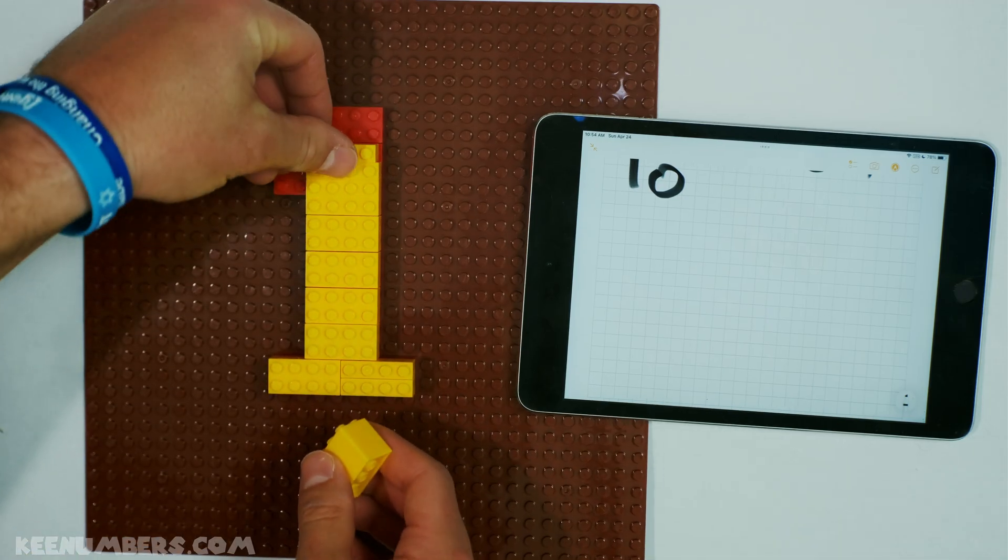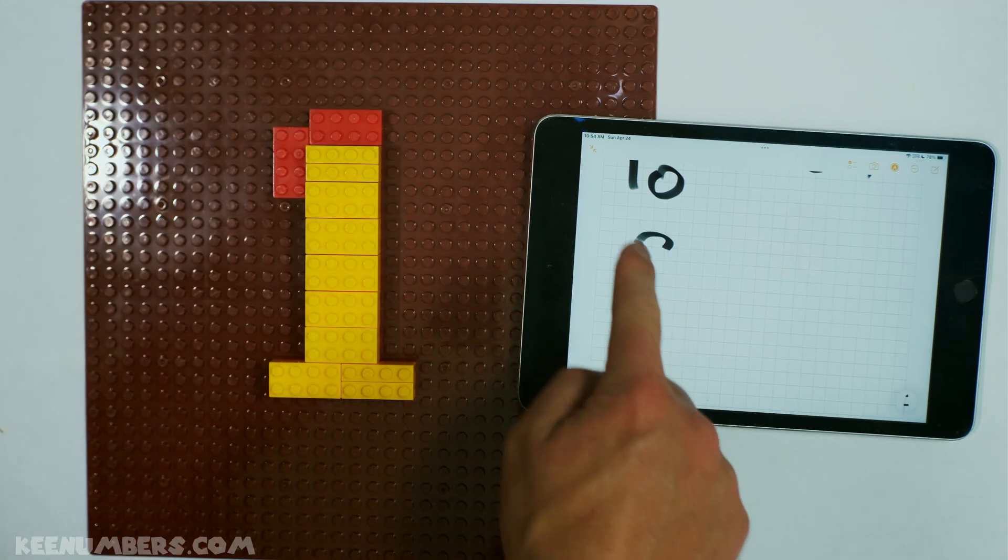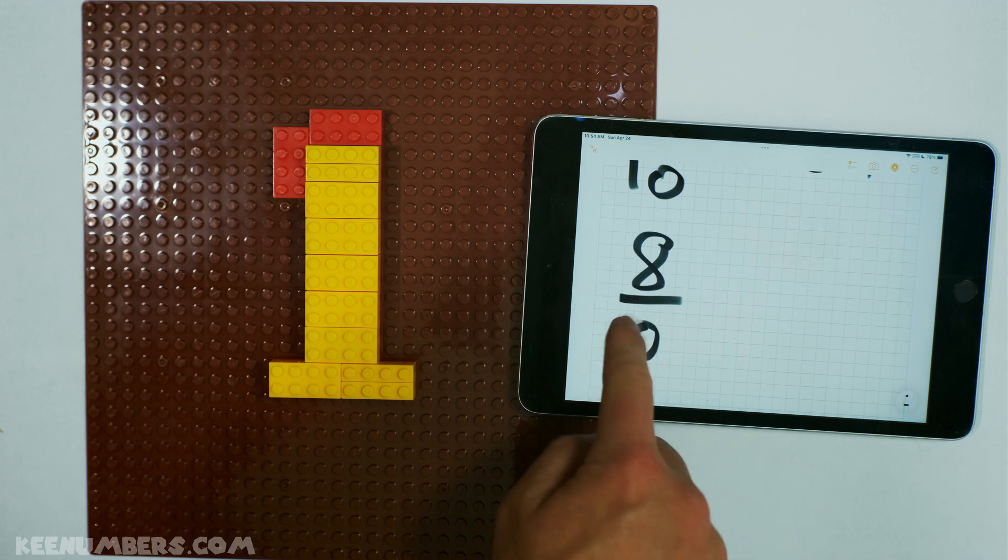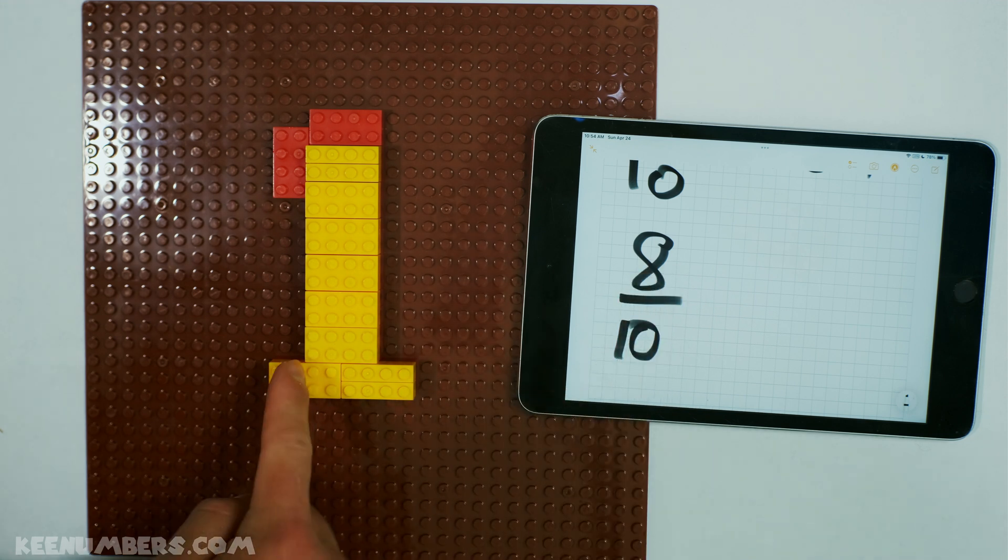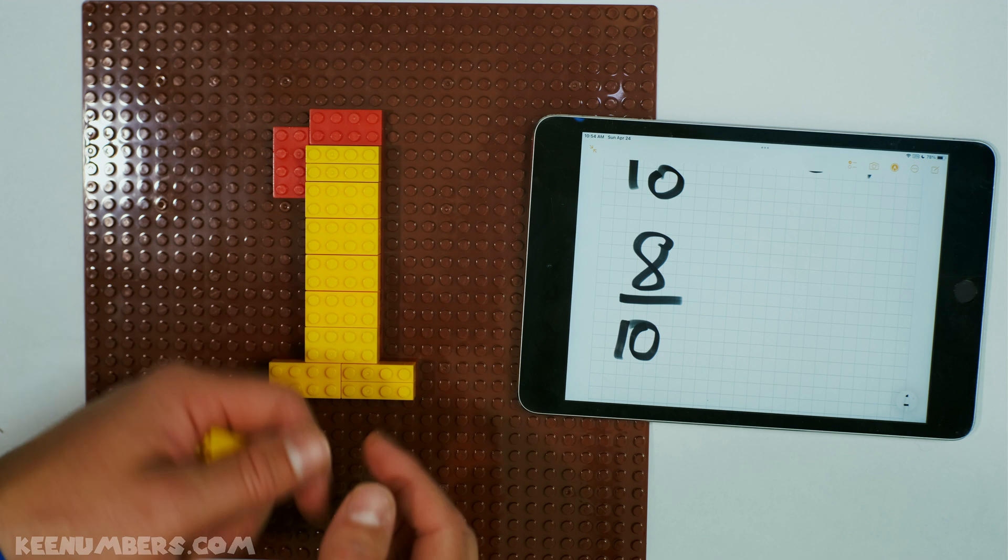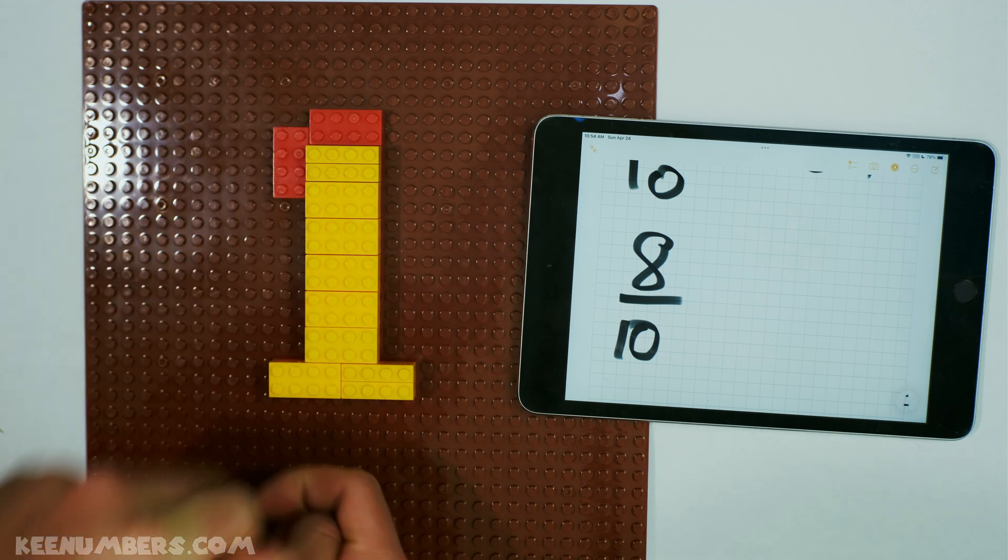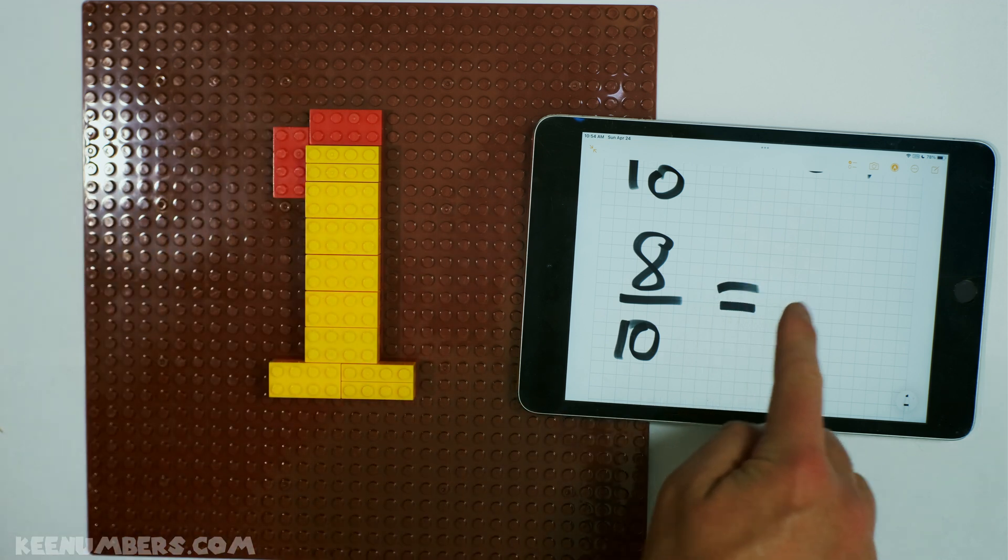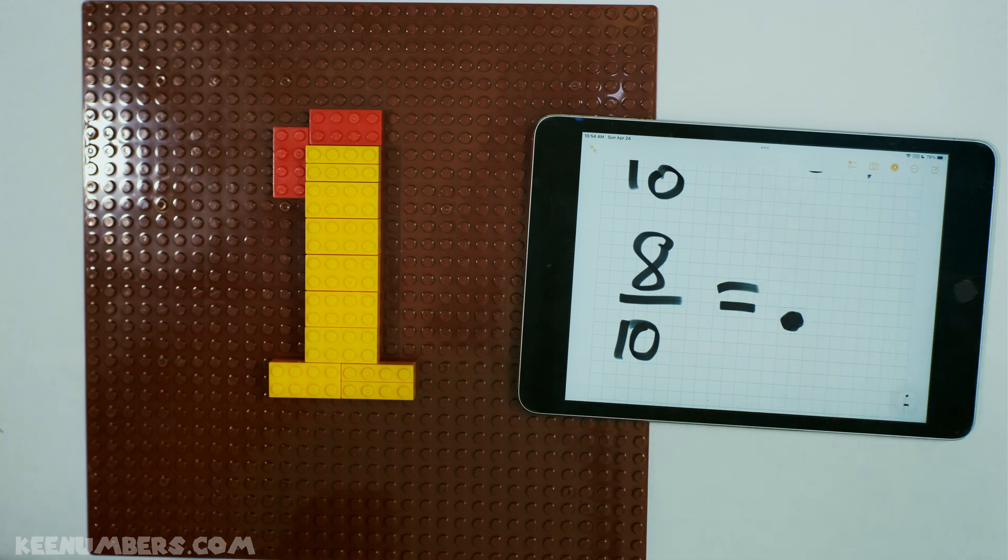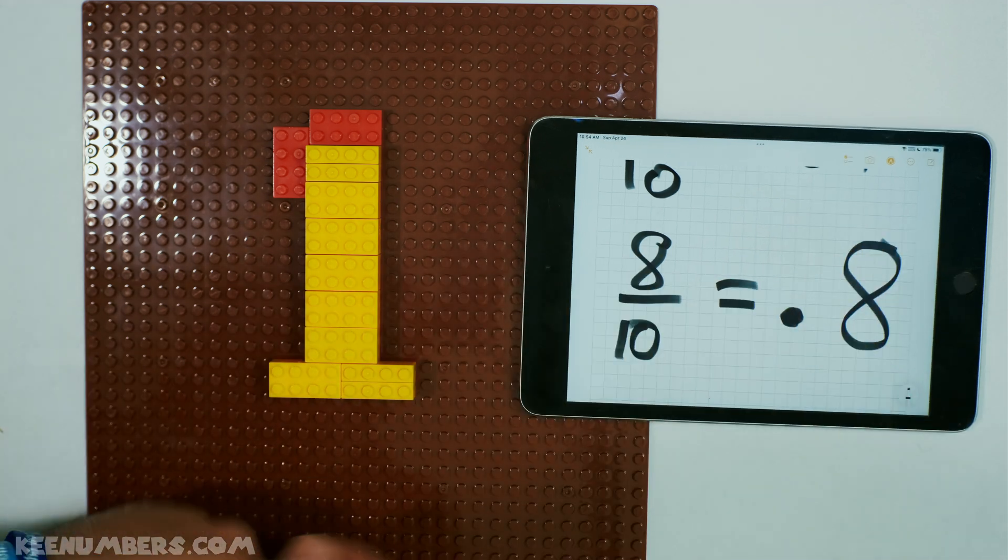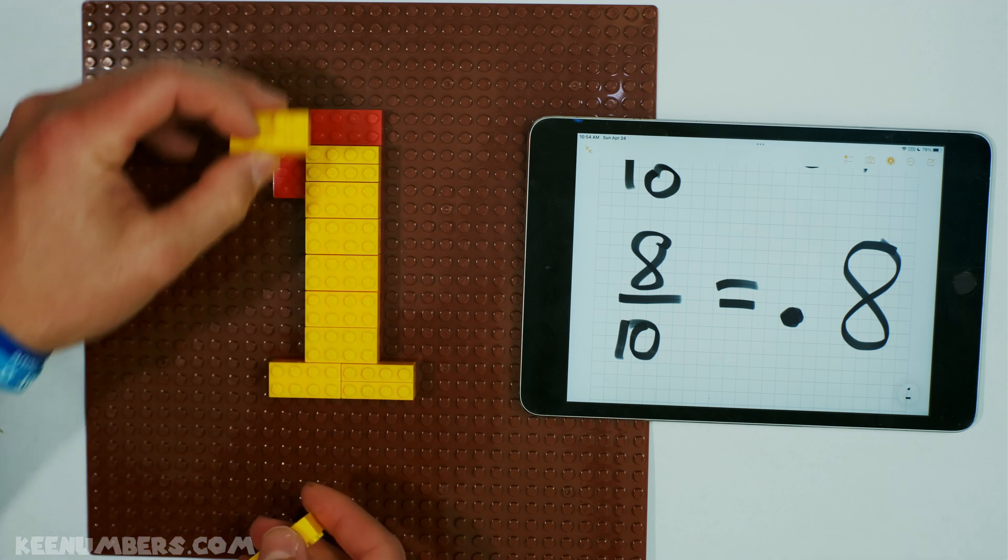What about 8 tenths? We have nearly completed our mission here. 8 tenths. We have 8 of these bricks filling up the 1 whole number. We can say it's 0.8.